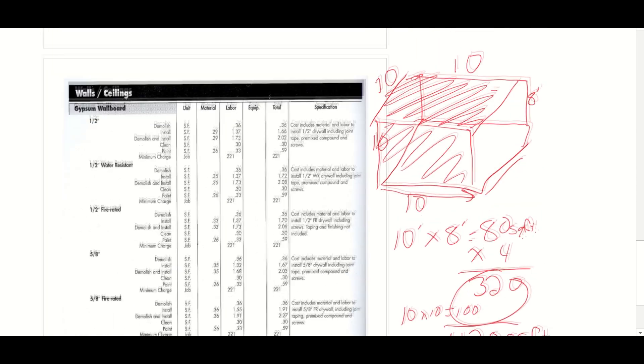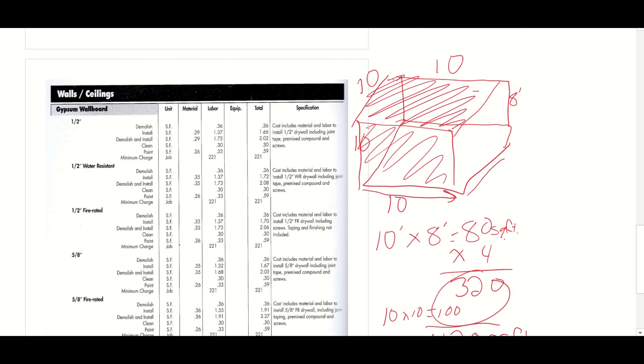I also have a ceiling. And my ceiling is going to be 10 feet by 10 feet. 10 by 10 is 100. Add my 320 plus my 100 and I get 420 square feet.